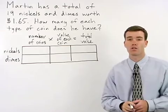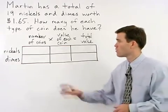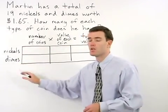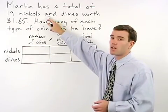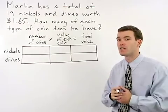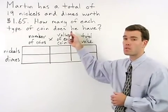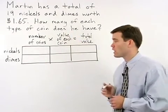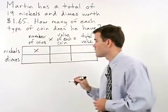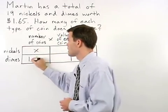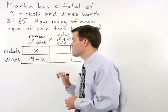Now, let's fill out our chart. For number of nickels and dimes, we know that Martin has a total of 19 nickels and dimes, but we don't know how many of each he has. In fact, that's what the problem is asking. So if we represent our number of nickels as x, we can call our number of dimes 19 minus x.